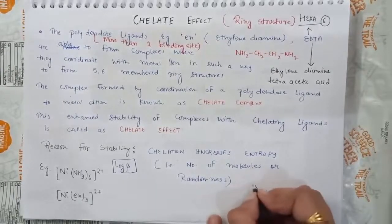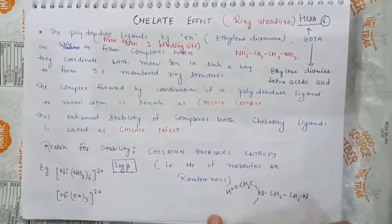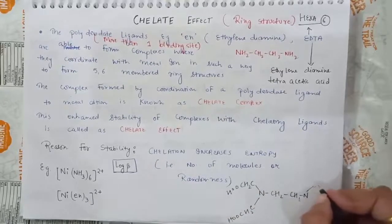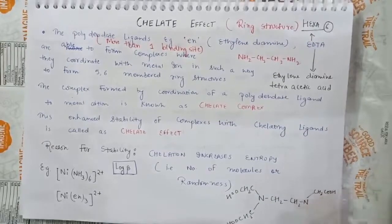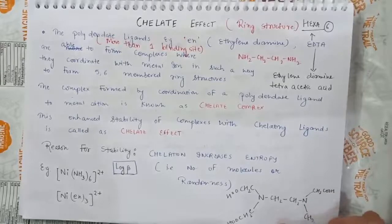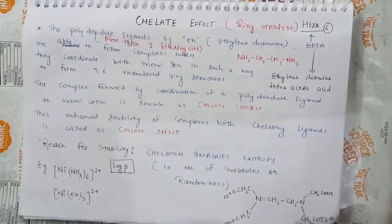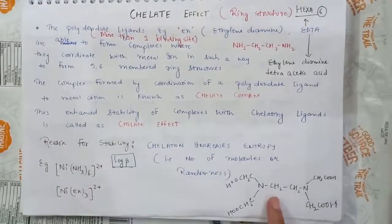In the structure of EDTA, there are 4 molecules of acetic acid present, attached on each nitrogen atom, and similarly on the other side as well. This is the structure of EDTA.